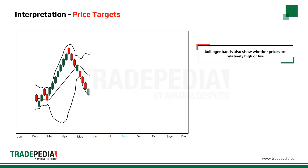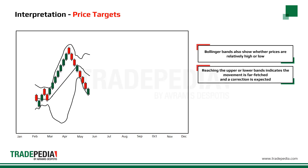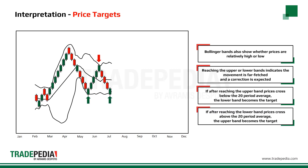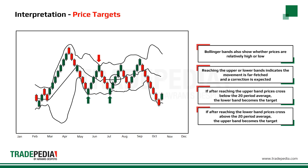Bollinger Bands also show whether prices are relatively high or low. Reaching the upper or lower bands indicates the movement is far-fetched and a correction is expected. If, after reaching the upper band, prices cross below the 20-period average, the lower band becomes the target. If, after reaching the lower band, prices cross above the 20-period average, the upper band becomes the target.